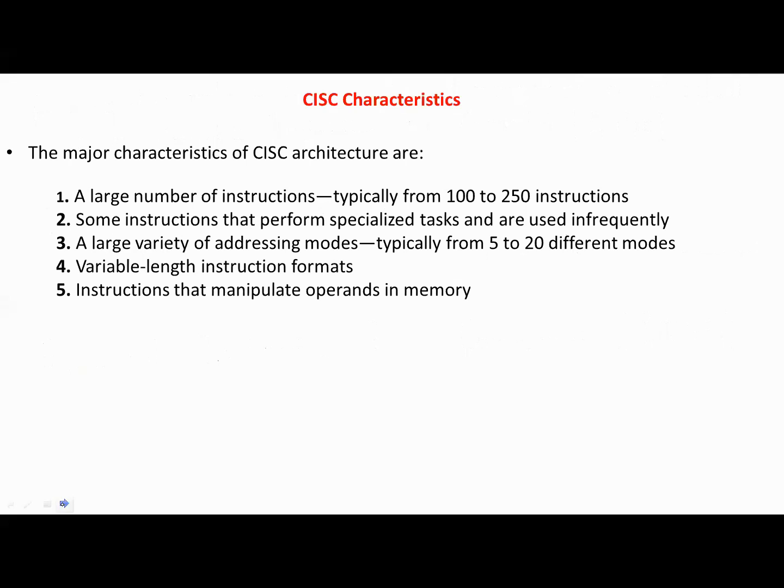The major characteristics of CISC architecture are: a large number of instructions, usually more than 100 instructions. Some special purpose instructions are used infrequently. In CISC computers, we have a large variety of addressing modes from 5 to 20 different modes. The instruction format is variable.